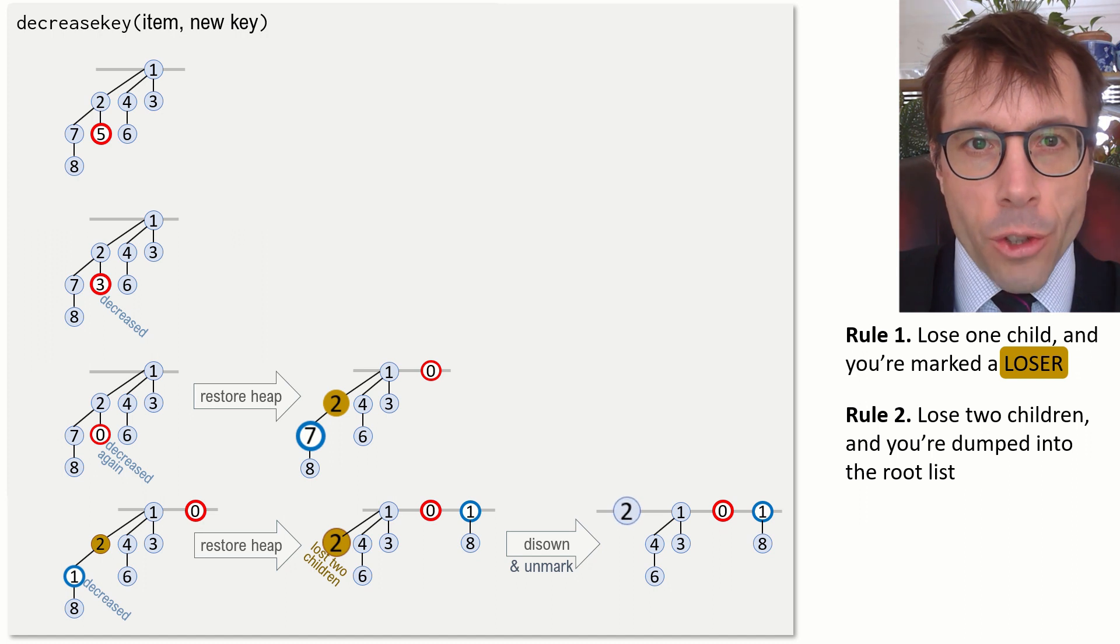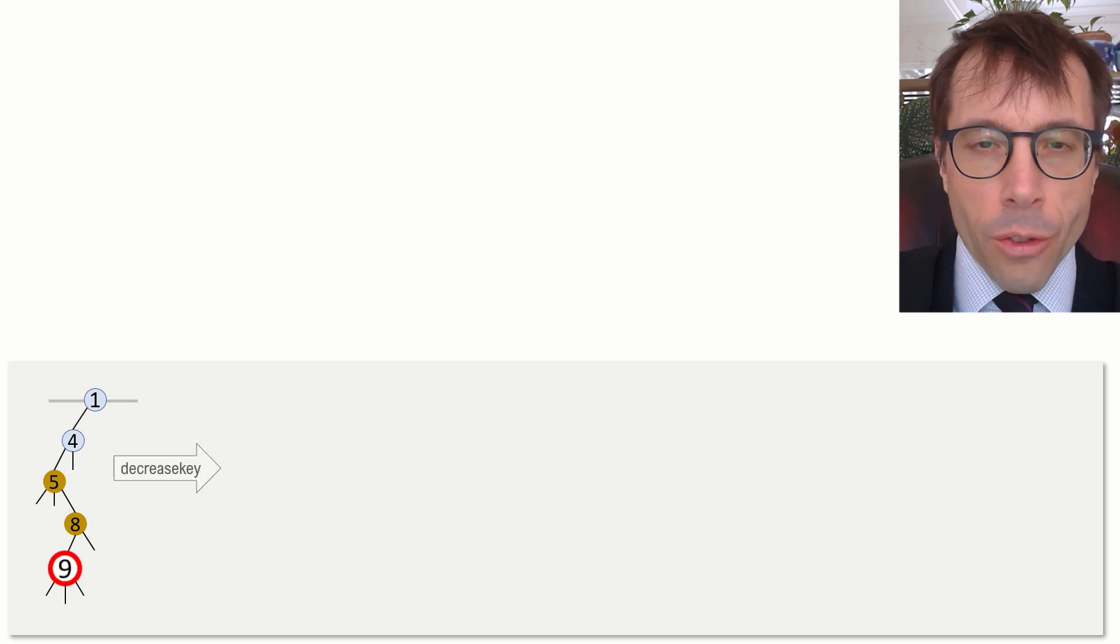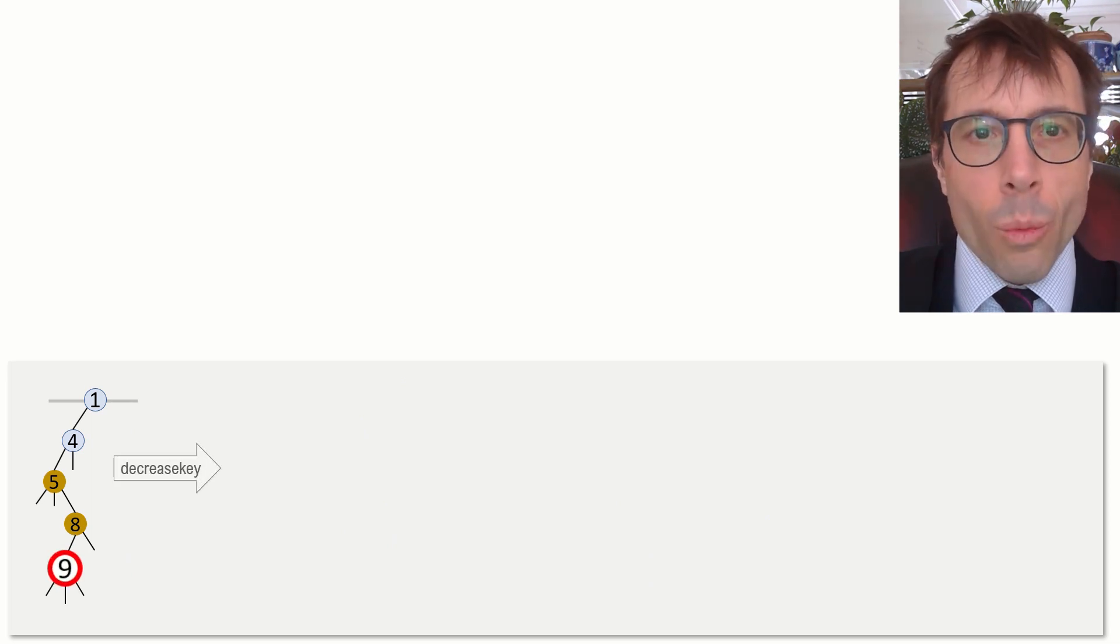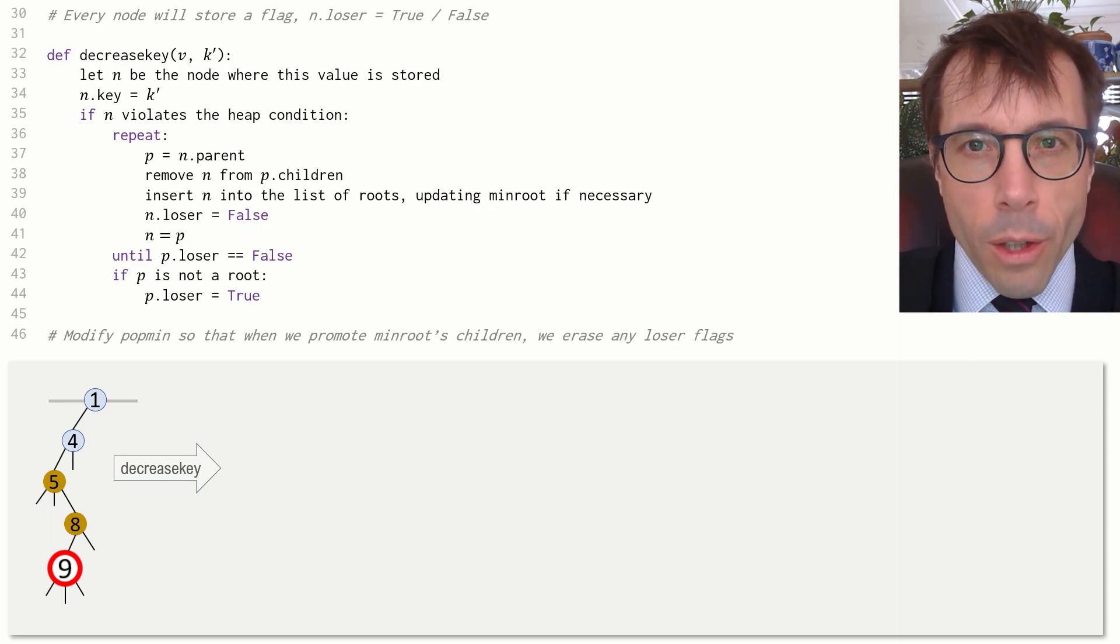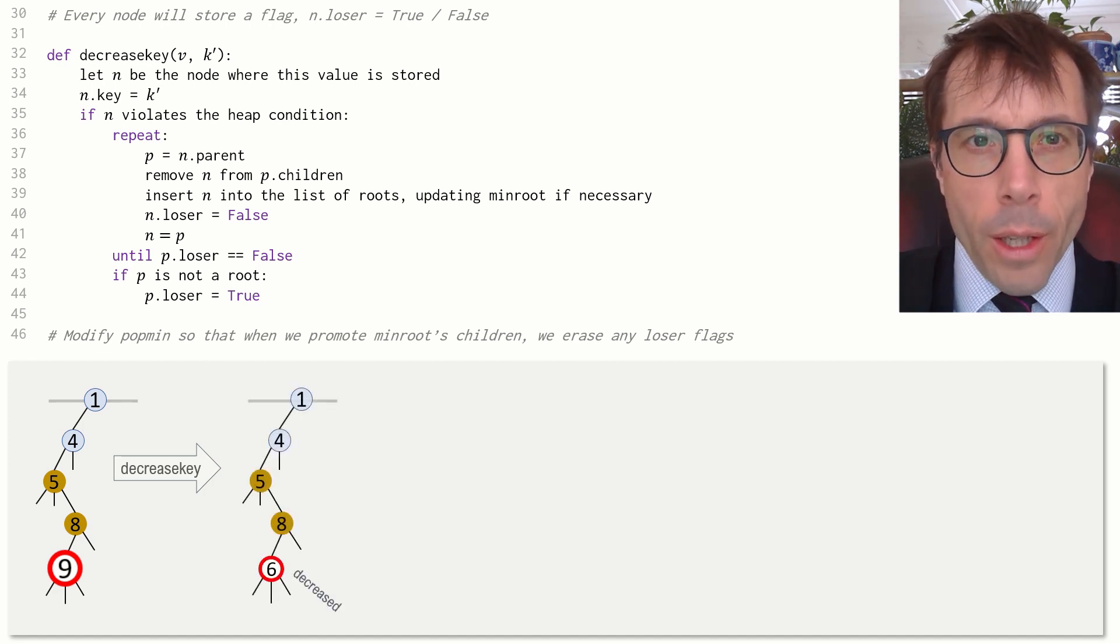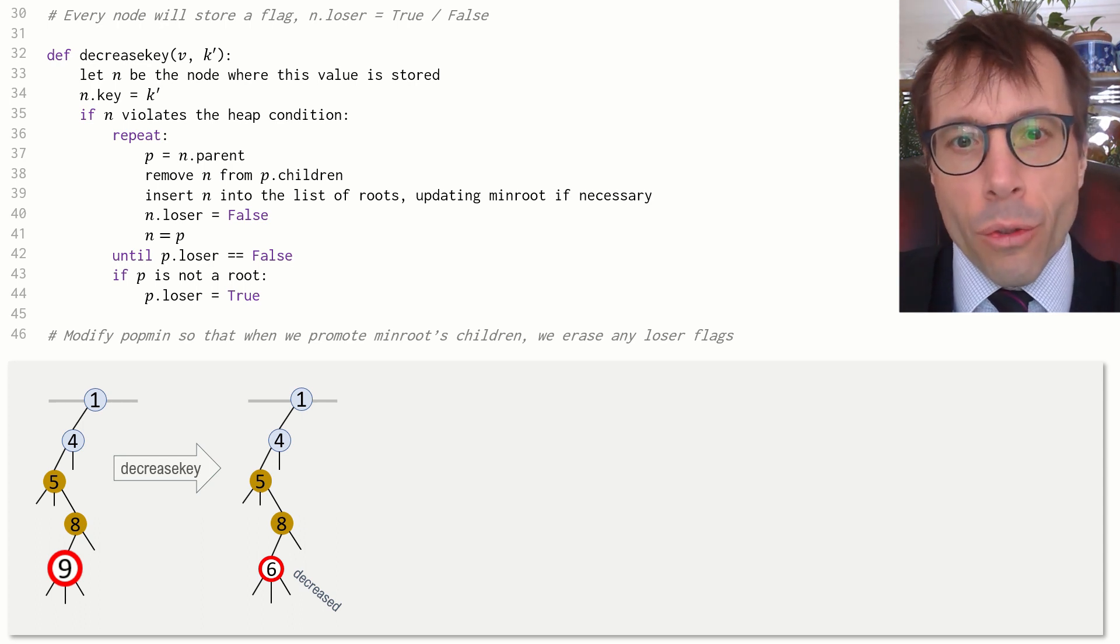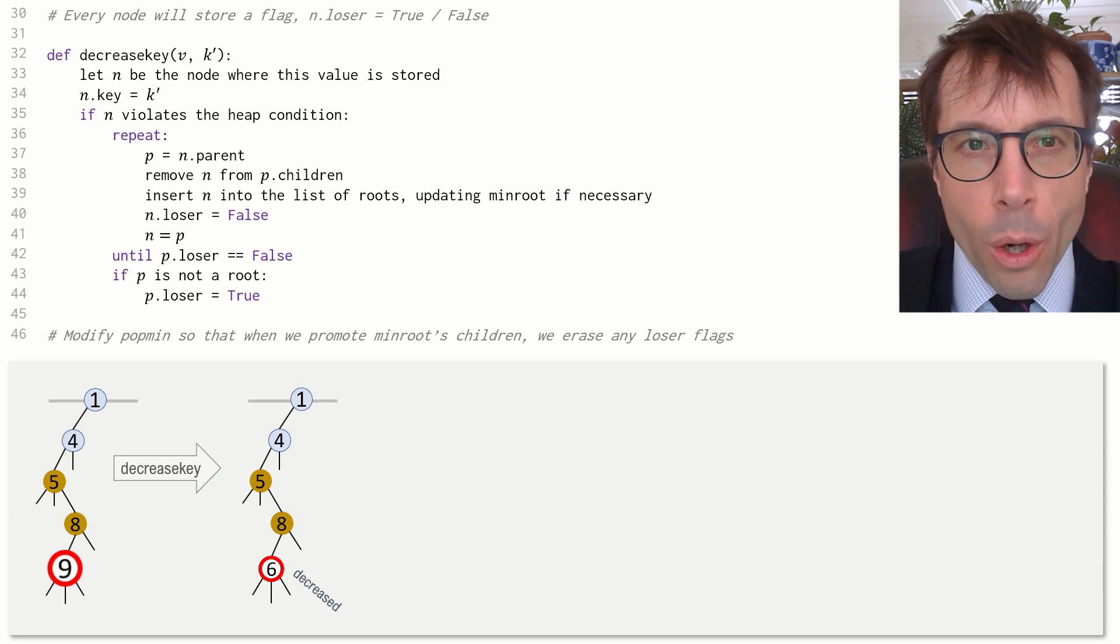Okay, so that's the Fibonacci heap. Let's go through a more complicated example. Here's an example with multiple loser ancestors. What I'd like you to do is work through the logic of what happens when we decrease the key of this bottom node, decrease it enough to cause a heap violation. It's really helpful to go through a sample run of an algorithm yourself rather than just watching. Please pause the video, work through the logic, and then when you're ready, press play.